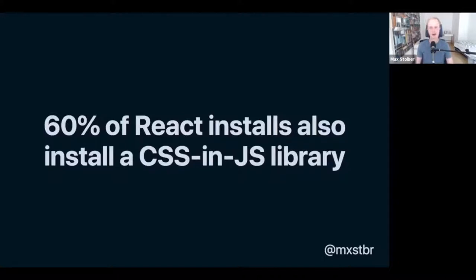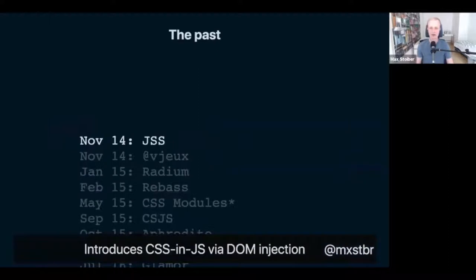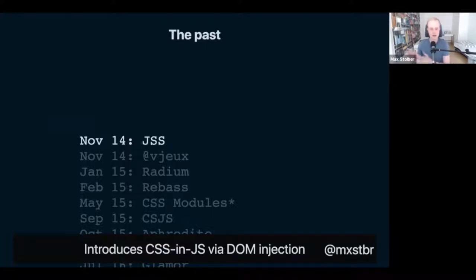Let's talk about how we actually got here. It already started in November of 2014. A programmer from Berlin called Olek built the very first CSS-in-JS library called JSS. JSS was really the first to introduce CSS-in-JS where you could write CSS in your JavaScript and it would be injected into the DOM and just work beautifully. JSS was way ahead of its time and even nowadays is a fantastic, well-maintained, and widely-used library.